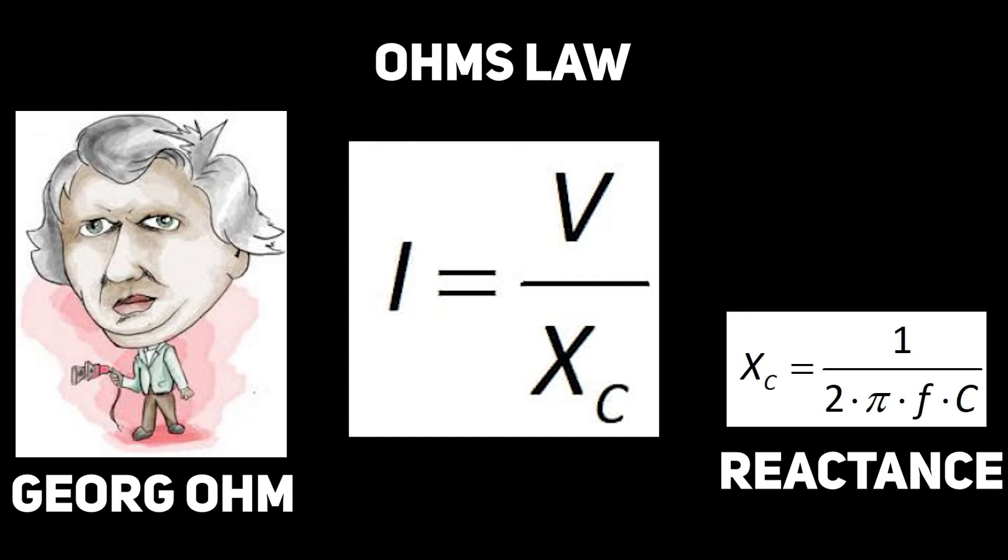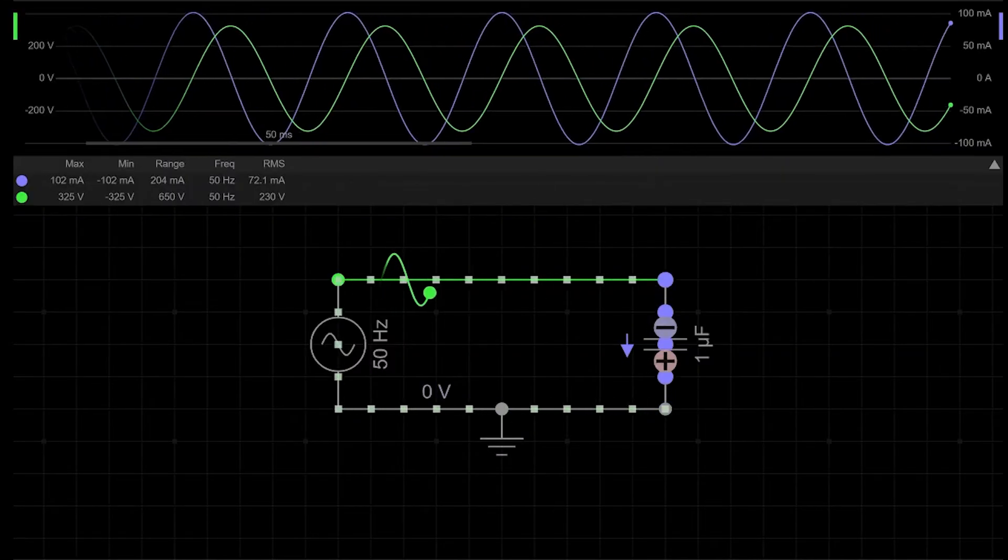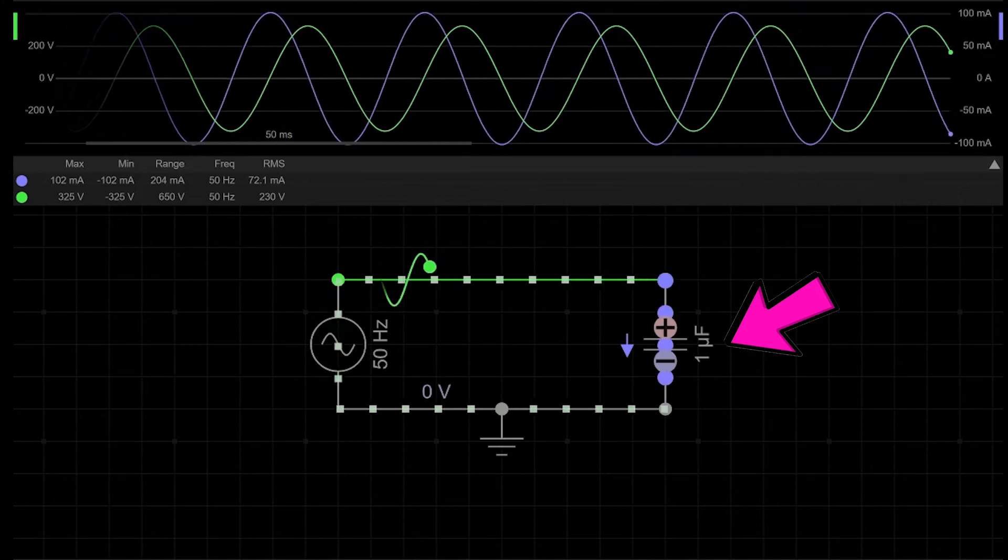Enough of this theory, we need some practice and calculations. Let's assume we have a 230V AC voltage source on the input of frequency 50 Hz, and this source is connected to a capacitor of 1 microfarad. And we just simply need to calculate current through it.